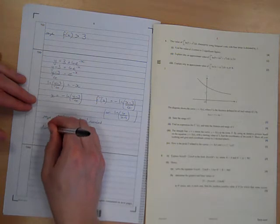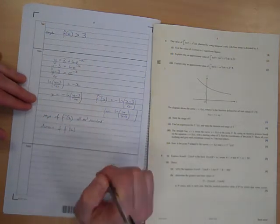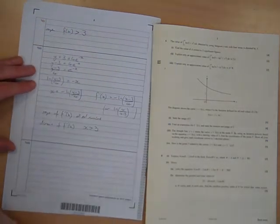The domain of the inverse is the same as the range of the original function, so it is x greater than 3. There we are.